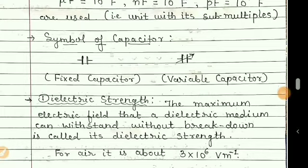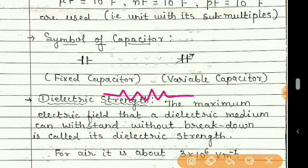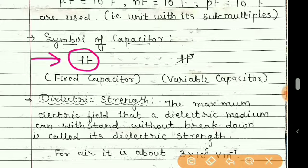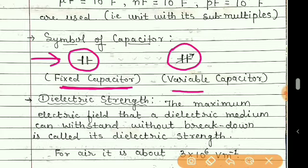Components of a circuit are shown by their symbols. A resistor is shown by its standard symbol, which you studied in Class 10. When a capacitor is connected in a circuit, a fixed capacitor uses one symbol — meaning its value cannot be changed — while a variable capacitor uses a different symbol, and its value can be changed using some regulator.